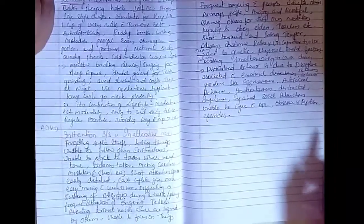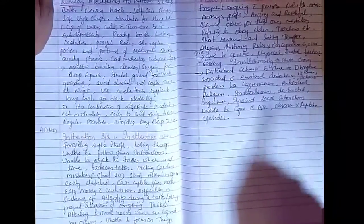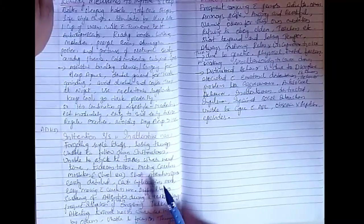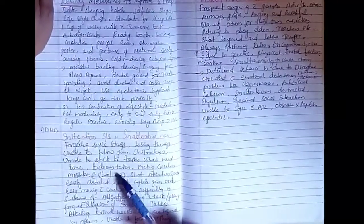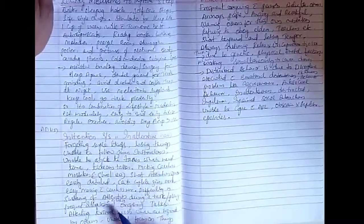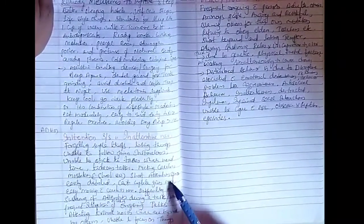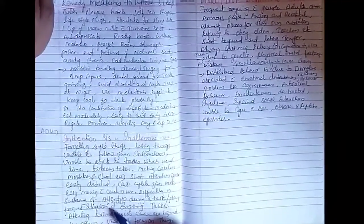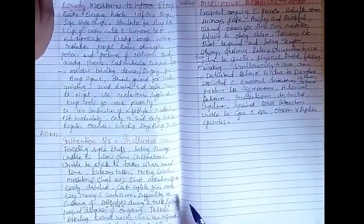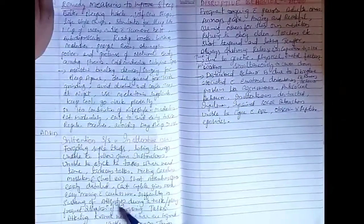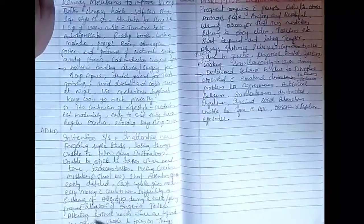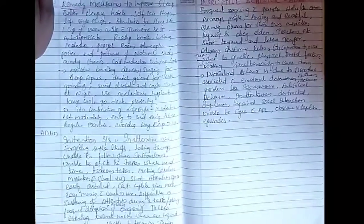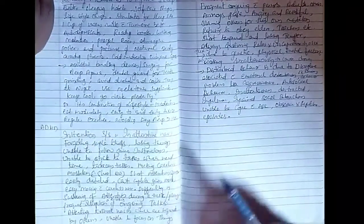Inattention can be forgetting simple things or losing things. The child is unable to follow given instructions, unable to stick to tasks which need time or tedious tasks, making careless mistakes at school and in the family, short attention span, easily disturbed and cannot complete given tasks in time, easy moving and carelessness, difficulty in sustaining attention during task or play, frequent interruption or breaking of ongoing activities or tasks, attending to trivial noises which are ignored by others and unable to focus on things.